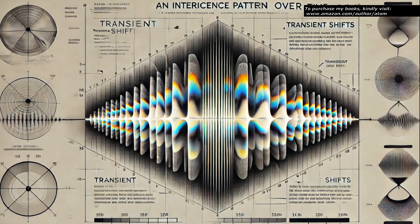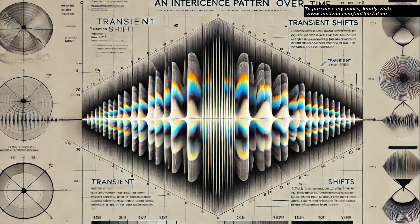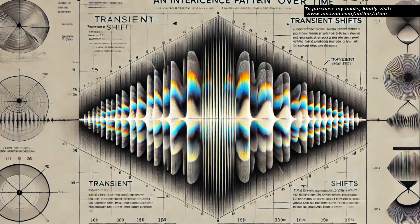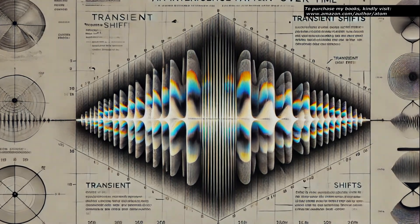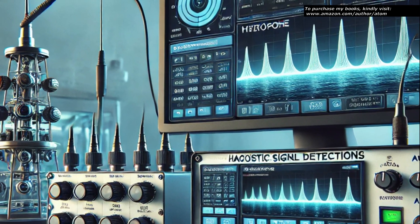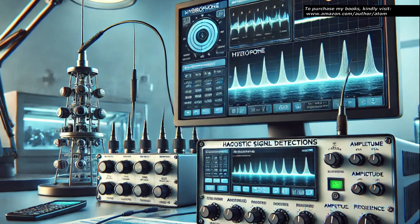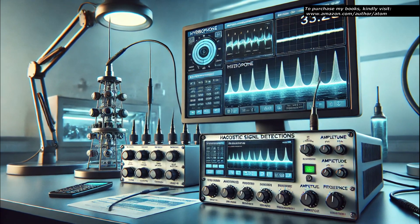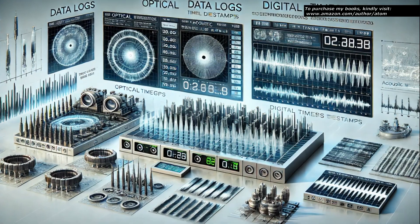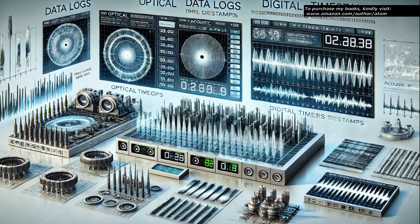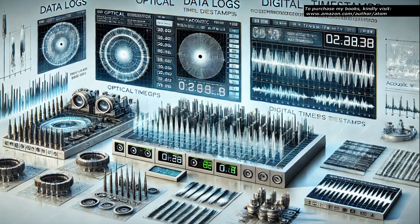During the observation period, the interferometer detects transient phase shifts in the interference pattern that may indicate changes in the refractive index of the heavy water. At the same time, the hydrophones monitor for acoustic signals that correspond to pressure waves propagating through the medium. Precise timestamps are recorded for all detected events to facilitate cross-correlation between the two datasets.